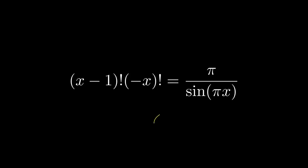x minus 1 factorial times negative x factorial equals pi over sine of pi times x? It doesn't make any sense. The factorial function is only defined for whole numbers. In this video, we will go in-depth into how this identity works.